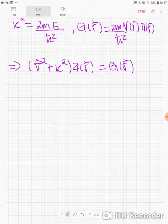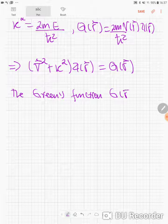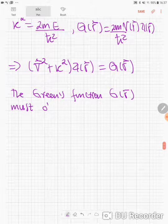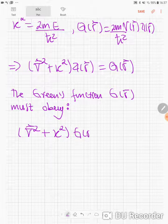But we will see how to go around this. For the Green's function for this equation, the Green's function G of R must obey the following equation: Laplacian plus kappa squared times G of R equal to delta 3 of R.